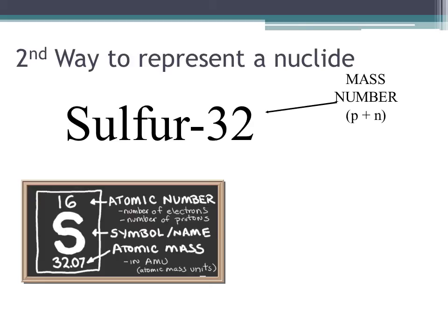To use this nuclide symbol, we look up the symbol for sulfur, which is S. Going to the periodic table, the atomic number of sulfur is 16, so sulfur atoms have 16 protons inside their nucleus. Since this represents an atom, it has 16 electrons, because in an atom the number of protons equals the number of electrons. The mass number is 32, so 32 equals 16 protons plus X neutrons, giving us 16 neutrons inside the nucleus.